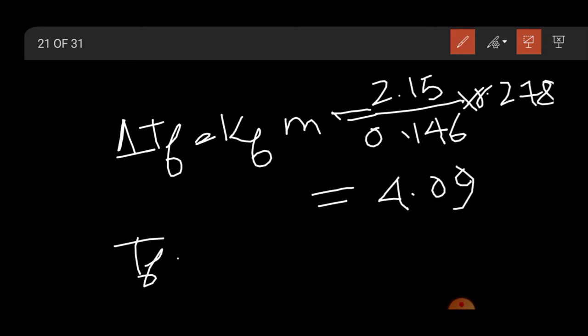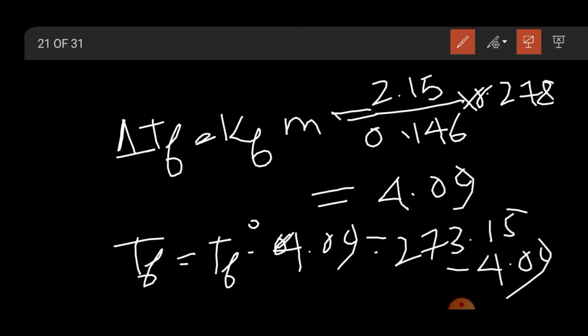Now Tf will be Tf naught minus 4.09. Tf naught will be 273.15 minus 4.09. That means Tf will be 269.06 Kelvin.